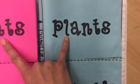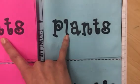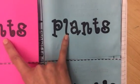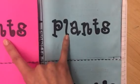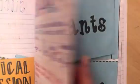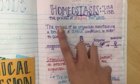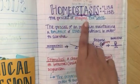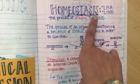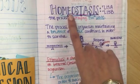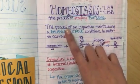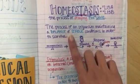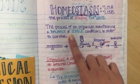Homeostasis involves internal and external stimuli, which are these two foldables that we glued in yesterday. My page numbers are different than yours, so your foldables are glued on two different pages — I messed mine up, that's my fault, so don't worry about that. Homeostasis means the process of staying the same: homeo means the same, stay means staying, and -sis is the process. A longer definition is the process of an organism maintaining a balance of stable conditions in order to survive.